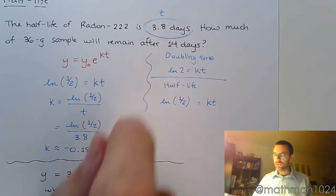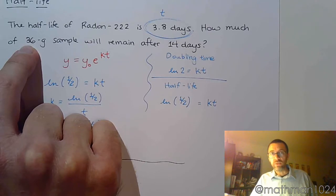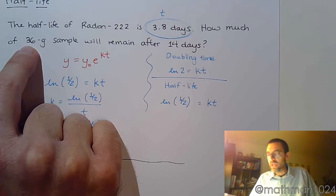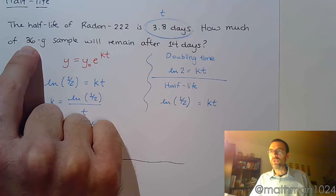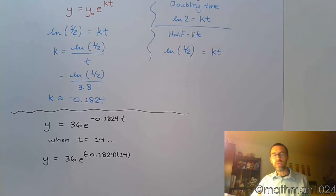So that means in 4 days, you're going to have half of this, which is going to be 18. In 8 days, half of that, which is 9. In 12 days, half of that, which is 4.5. In 16 days, half of that, which is 2.25. So I expect my answer to be between 2.25 and 4.5 because 14 is in between 12 and 16, which is what we're estimating.